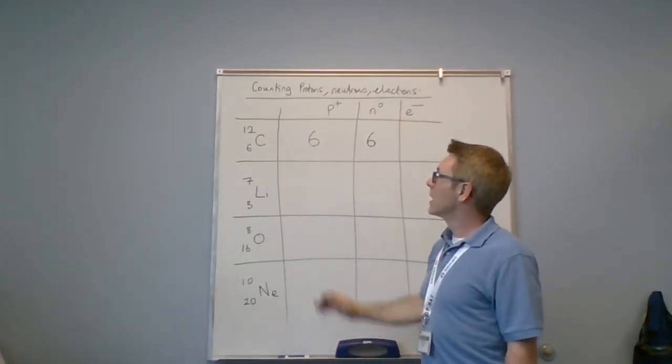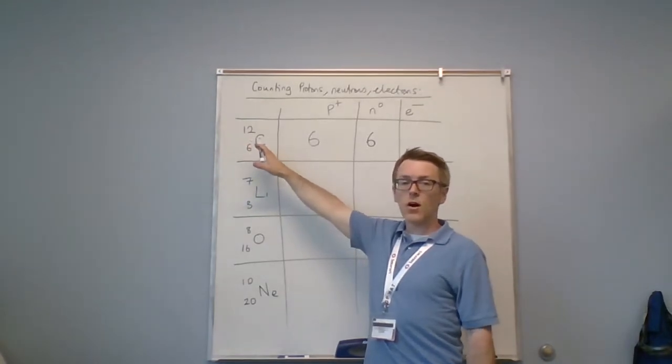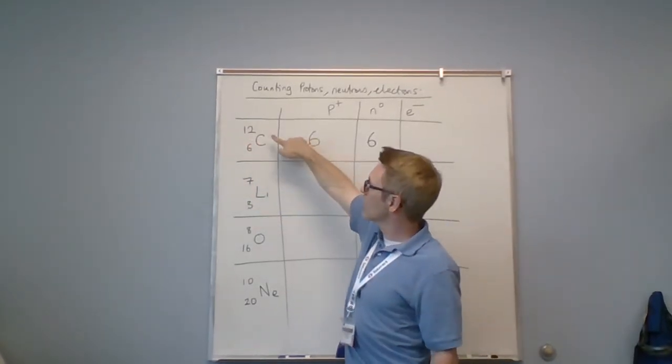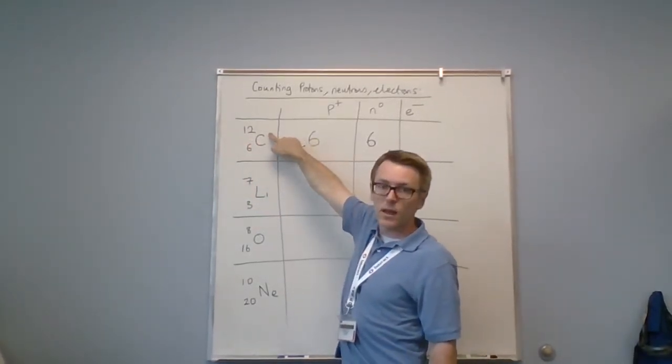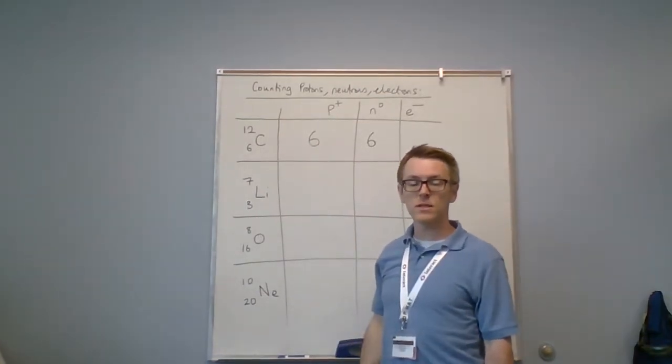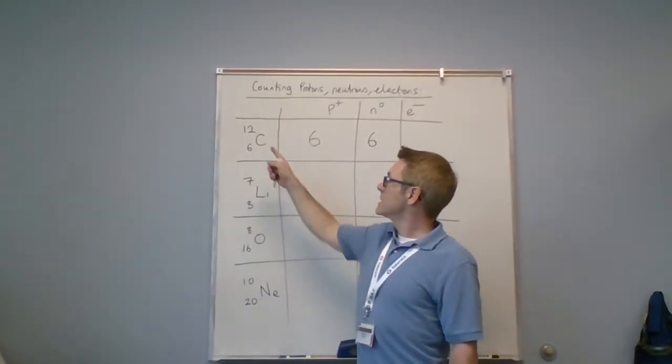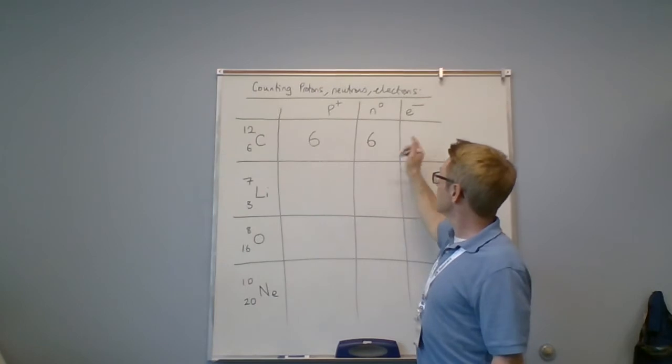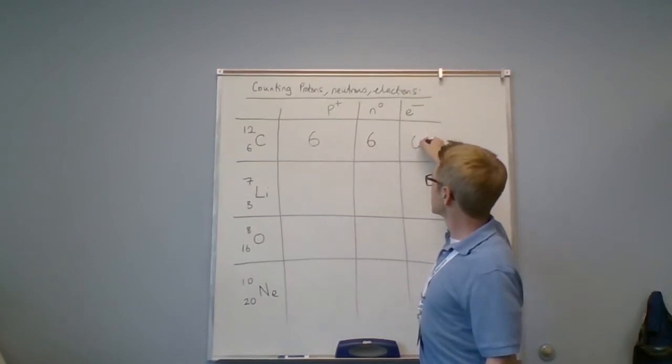I know that there's no charge on the element. If there were a charge it would be written here, and I don't see anything, so I assume it's neutral. So Z is also the number of electrons. Z is 6, so there are 6 electrons.